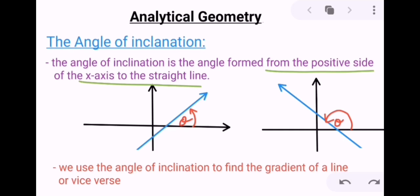Here we have a line that has a negative gradient, but still we look at the positive x-axis all the way to the straight line, and here you can see this is now an obtuse angle.